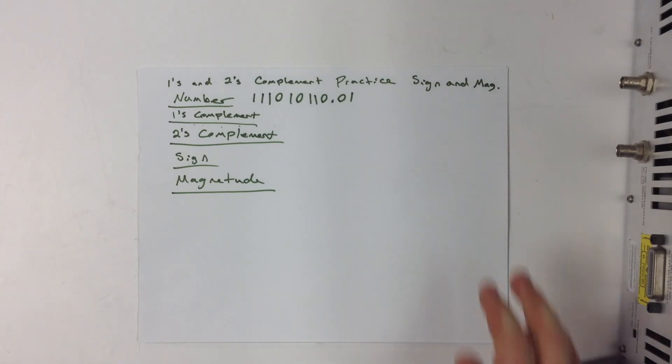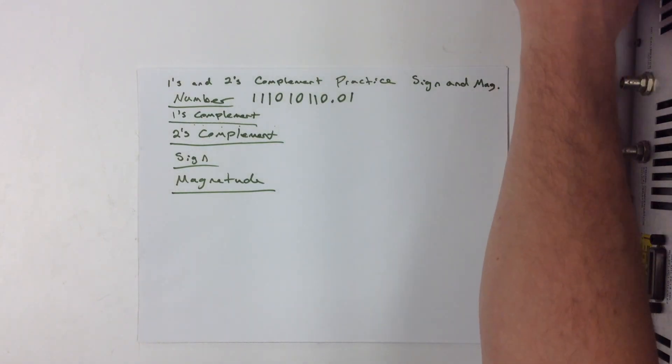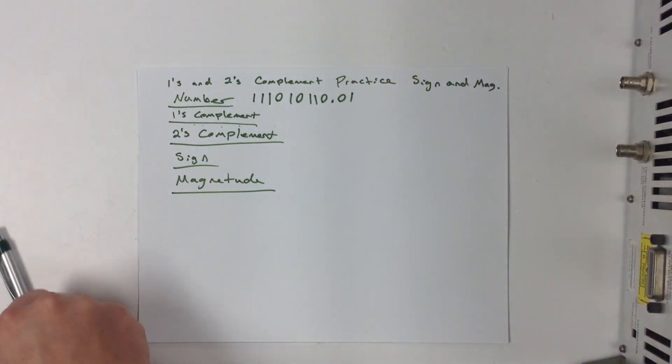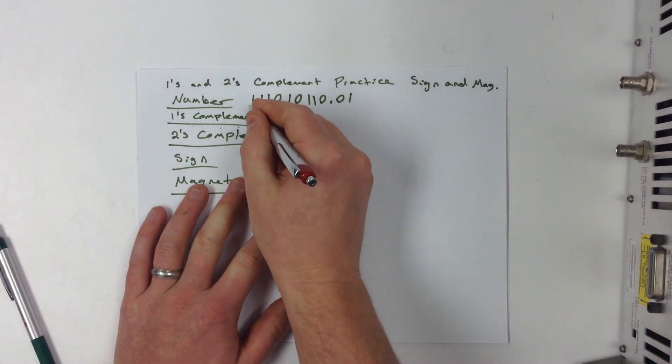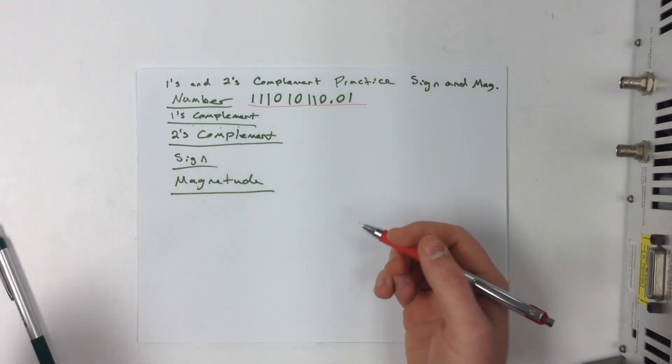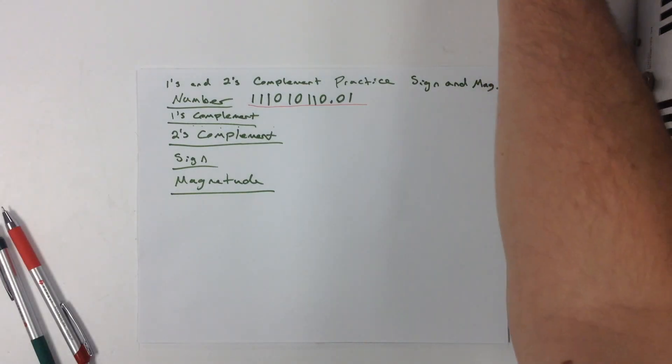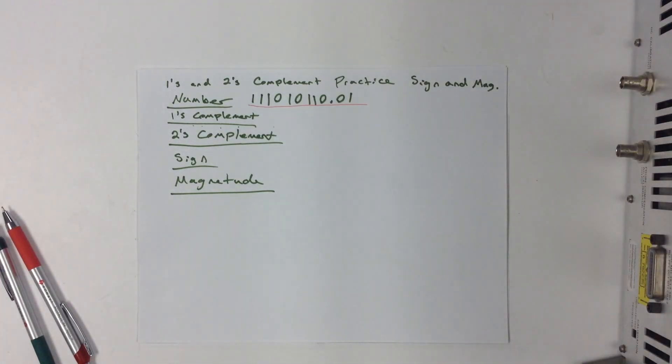What I want to do is show you how to find the 1's, the 2's, the sign, and the magnitude of the number. There's just three different ways to represent it.